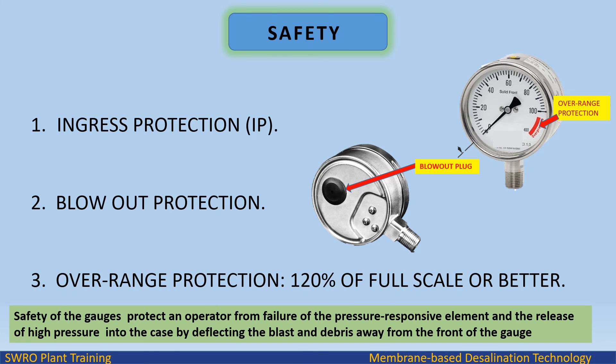Safety: Safety considerations include ingress protection (IP rating), blowout protection, and overrange protection (120% of full scale or better). Safety features protect the operator from failure of the pressure-responsive element and the release of high pressure into the case by deflecting the blast and debris away from the front of the gauge.